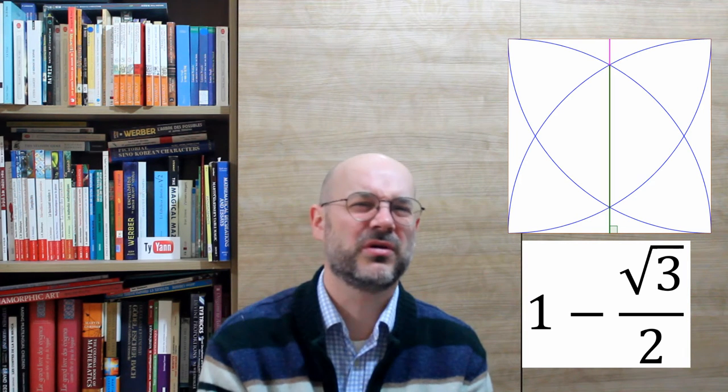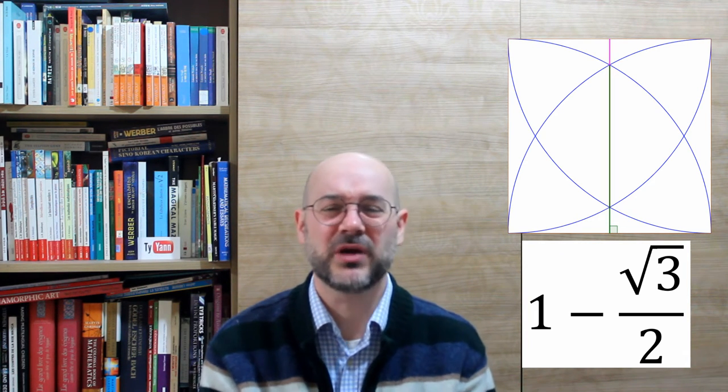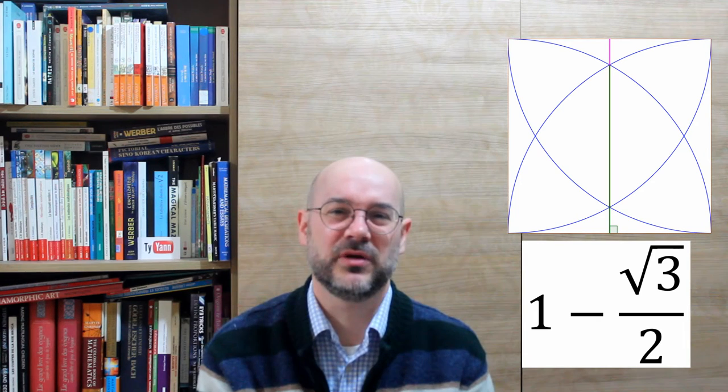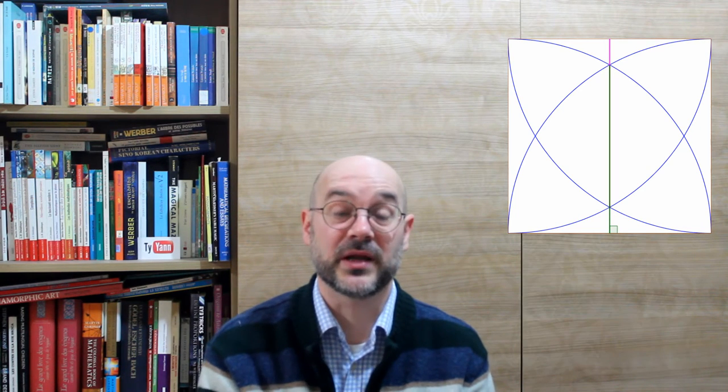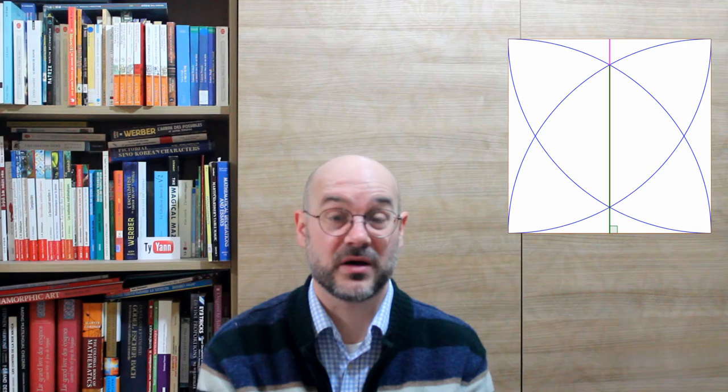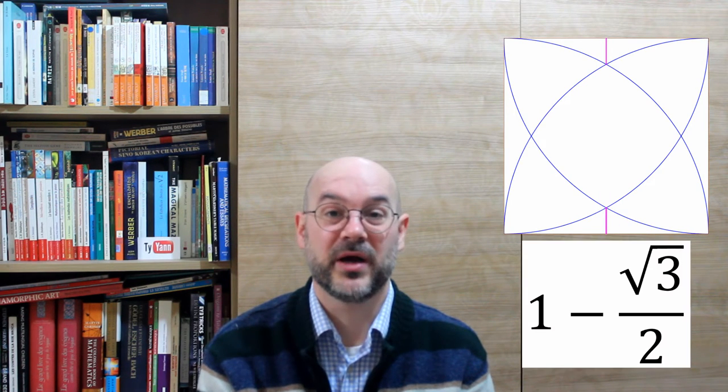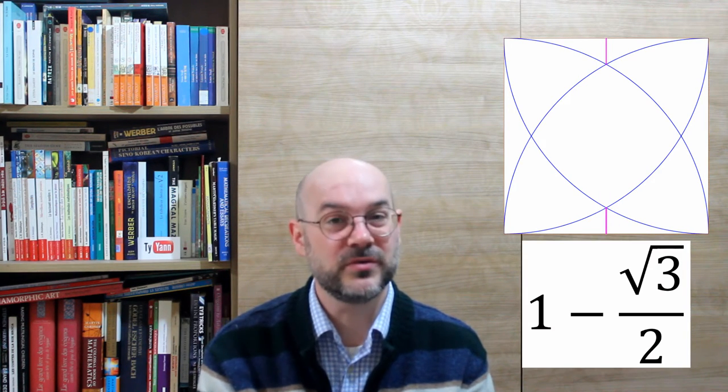I know it's a little bit intricate, but just bear with me. We are almost there. Now we know that length, we know it's also the length of the bottom, 1 minus the square root of 3 over 2.